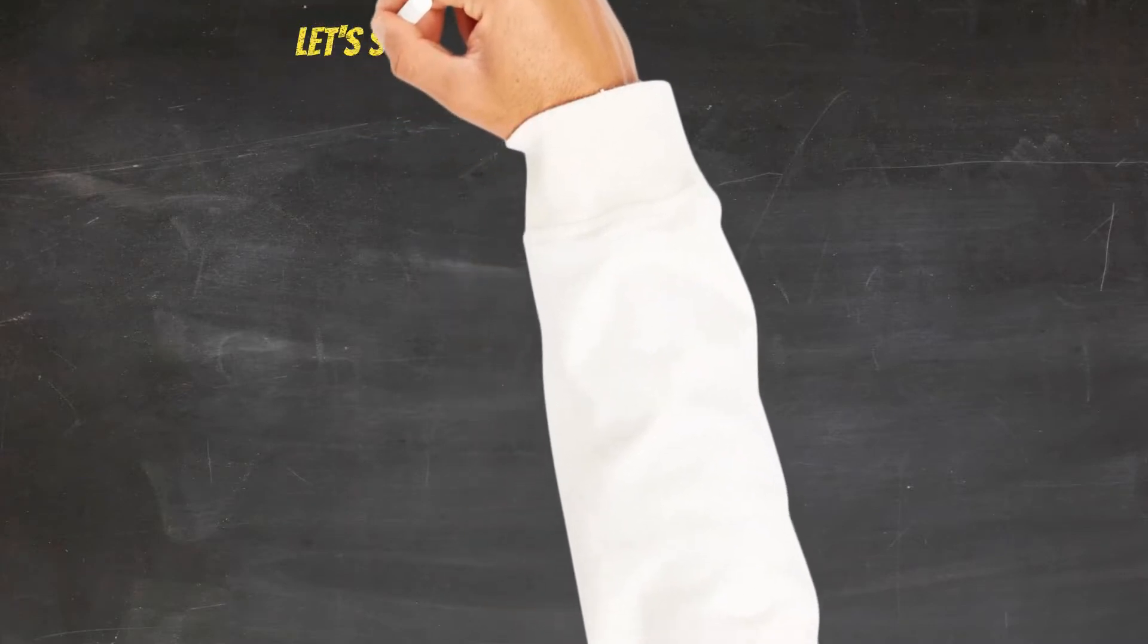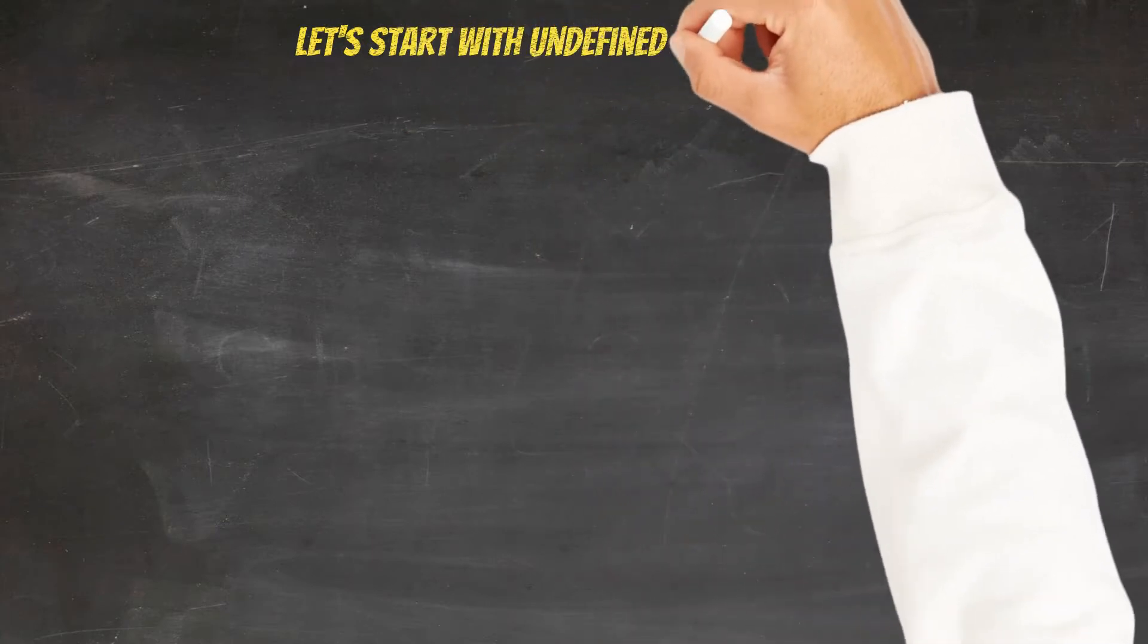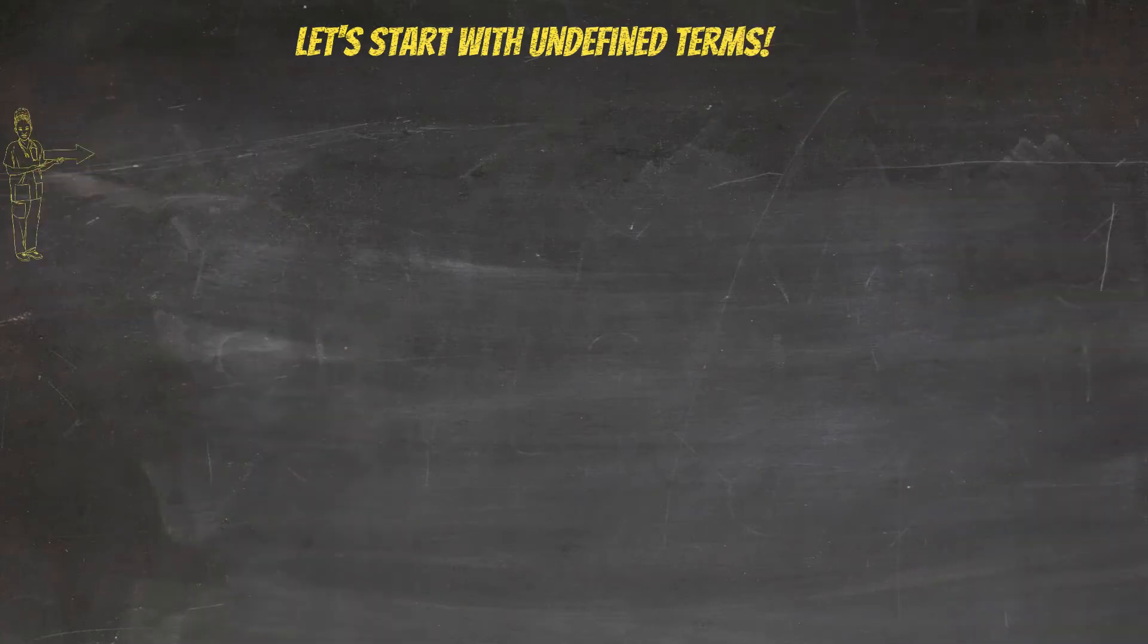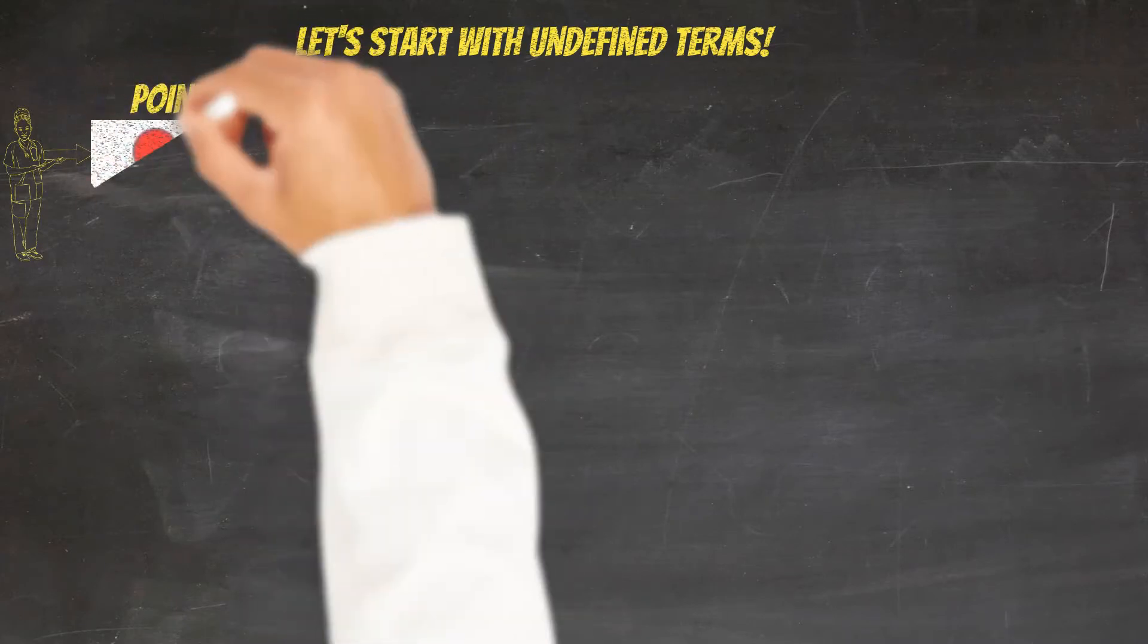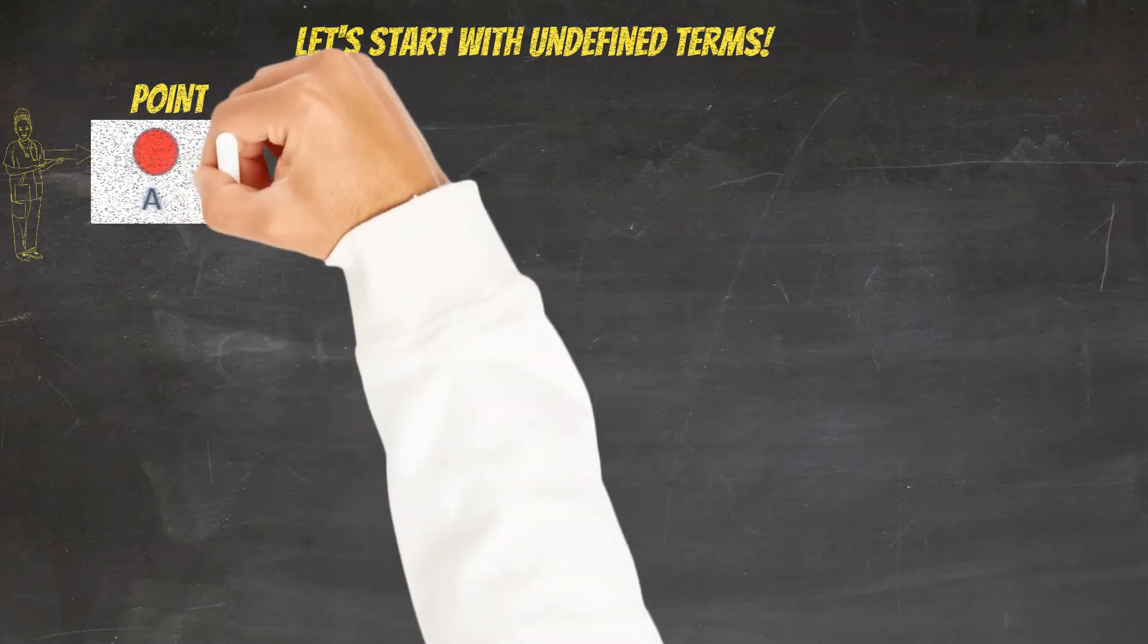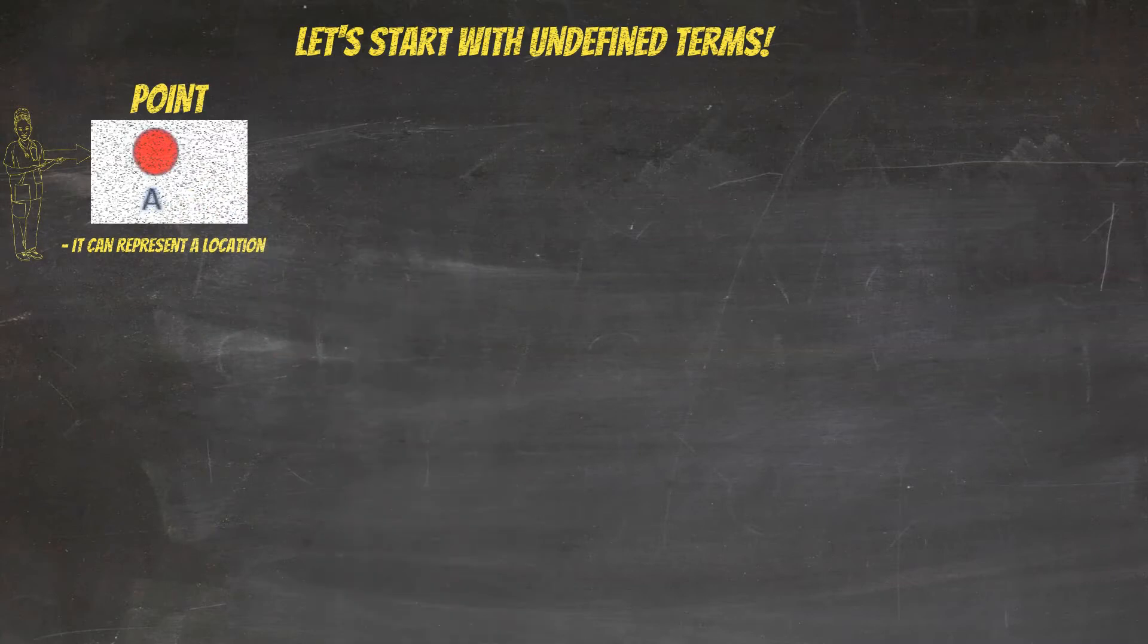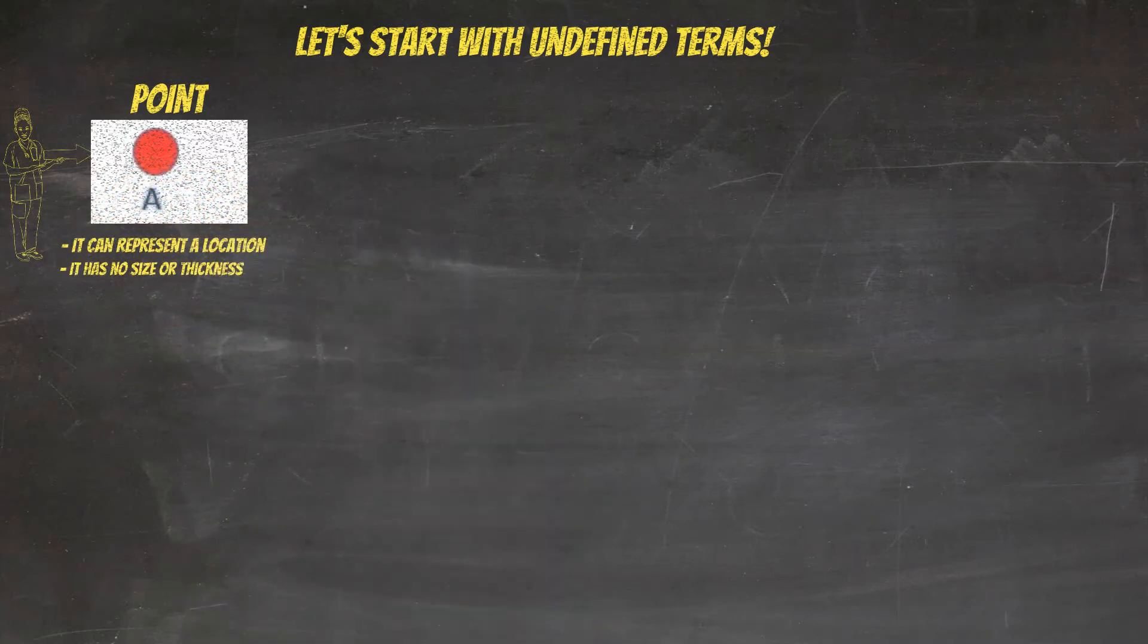Let's start with undefined terms. The first undefined term that I'm going to introduce in this video is a point. Next I'm going to give you a diagram of a point. So we have a visual. A point can represent a location and it has no size or thickness. The question I'm going to ask you here is, how would you name the point on this diagram?